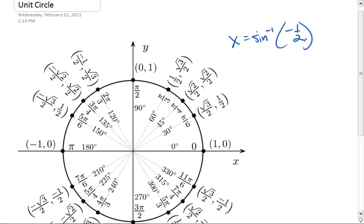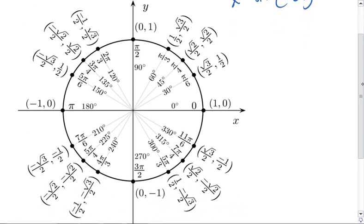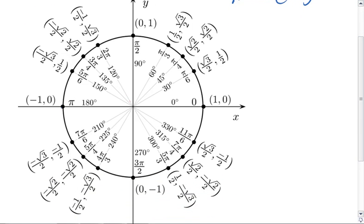Basically, we're asking for what angles will our sine value be -1/2? Since sine is vertical distance and it's negative, it means we're in this lower half of our circle. I look around and I see that my y coordinates of -1/2 occur here and here.